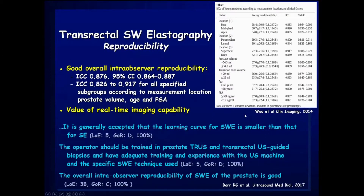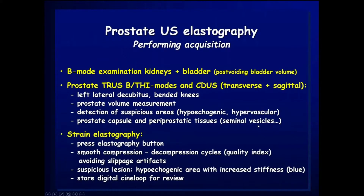It is generally accepted that the learning curve for shear wave elastography is reduced compared to strain elastography. Nevertheless, whatever the technique, the operator should obtain sufficient training for both transrectal ultrasound and transrectal elastography. The examination begins with B-mode evaluation of the kidneys and bladder, followed by a complete overview of the prostate using transrectal tissue harmonic imaging.